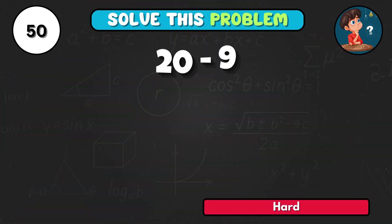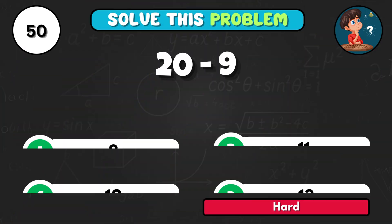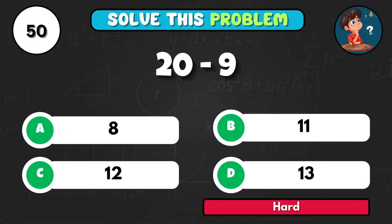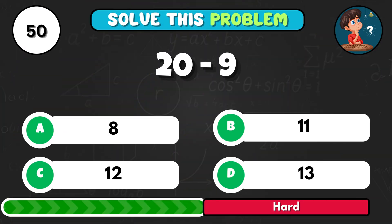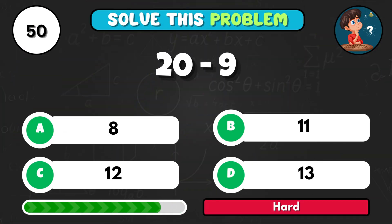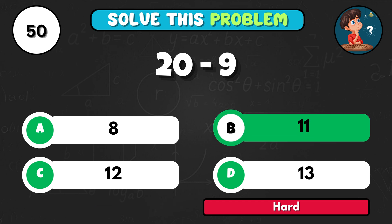And finally, 20 subtract 9 gives you… The correct choice is B11.